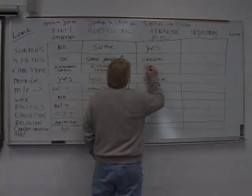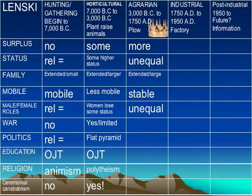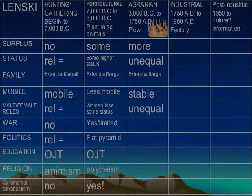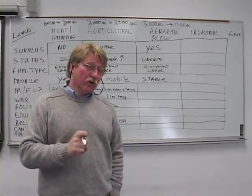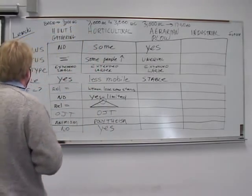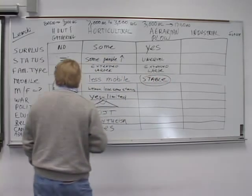Family type was extended: mom, dad, the kids, uncles, grandparents, etc., and often got very large because you had the surplus to feed them and you needed the workers in the fields. Notice they're very stable and not moving very much here.